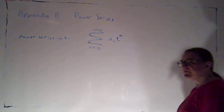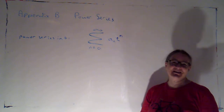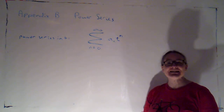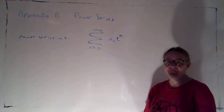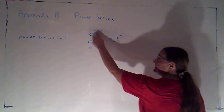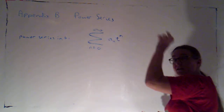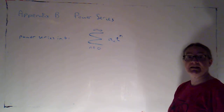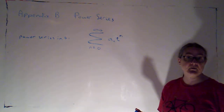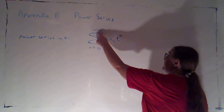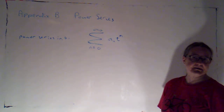It's almost like an infinite polynomial, except that's technically a misnomer. By definition, a polynomial is a finite sum. If I replaced infinity with some finite number — the biggest power of T in the sum — I would have a polynomial. When I have infinity, it's a power series.